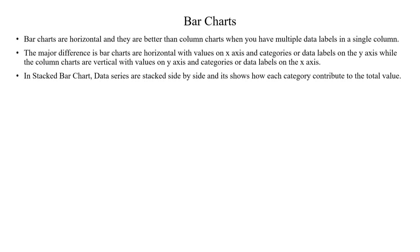Let's look at the stacked bar chart. The data series is stacked. In a column chart, bars are plotted one by one on top vertically. In a stacked bar chart, each category is stacked side by side as a single bar.